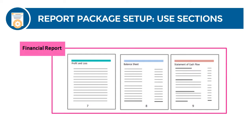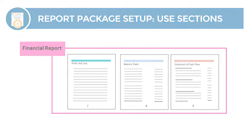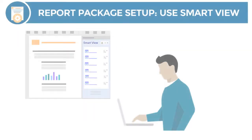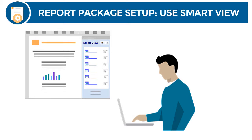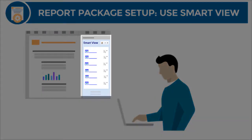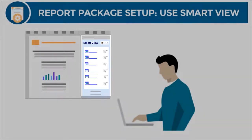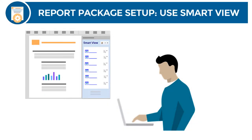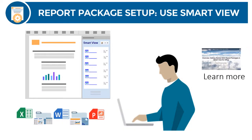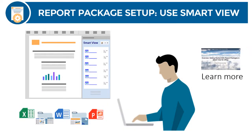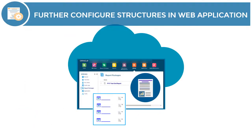Then use sections to group doclets by content or viewership. Alternatively, you can build your report package structure in SmartView for Office, where you can quickly add, arrange, and update doclets and sections using your day-to-day tools, reports, and files. Once the structure is defined, you can further configure the report package in the web application.